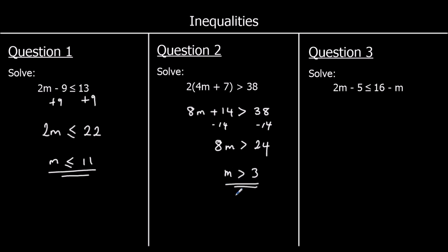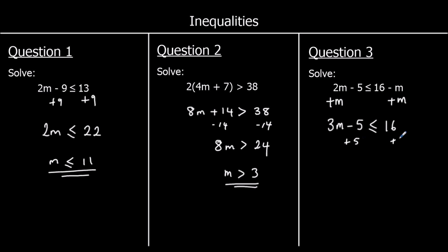Question three has m on both sides. I want to get rid of the smallest, which is −1m, so I add 1m to both sides, giving 3m − 5 ≤ 16. Then adding 5 to both sides gives 3m ≤ 21. Dividing both sides by 3 gives m ≤ 7.